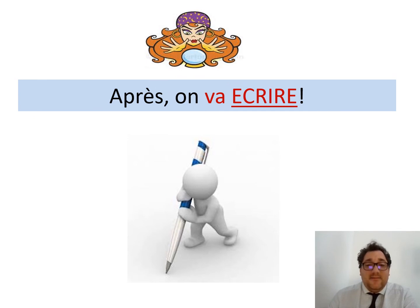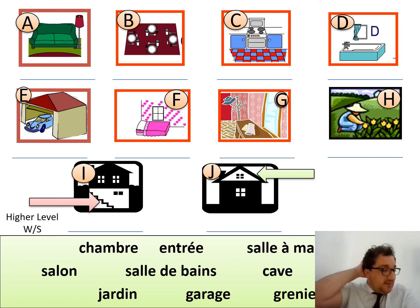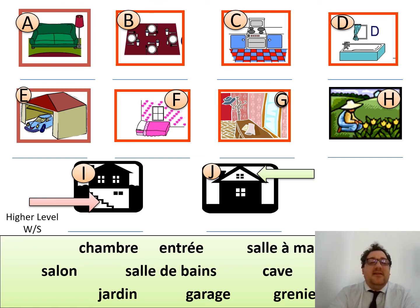Maintenant on va écrire — we're going to write, trying to use all of those. In your book, you need to write the letters from A to J and complete the match of the word with the correct image. I made it a bit harder — I did not put the le or la in front of the word, so your mission is to remember them. Pause the video, complete the work in your book, then go back to check if you've got your words correct. You can pause the video now.